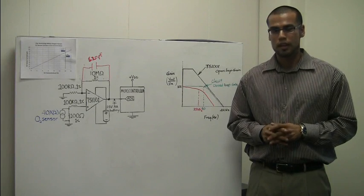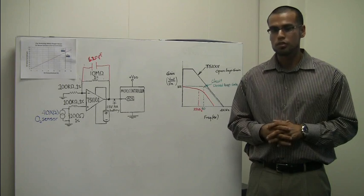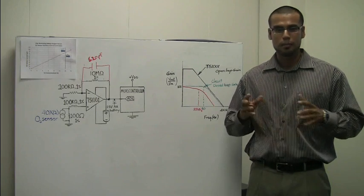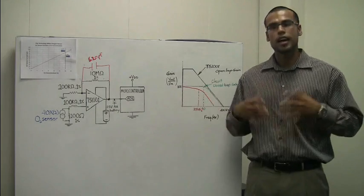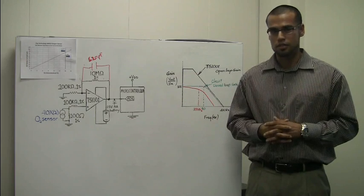The low input offset voltage, low input bias current, and high open loop gain contribute to a low output error that makes the TS-1001 operational amplifier great for this application as well as other applications that utilize other types of sensors.